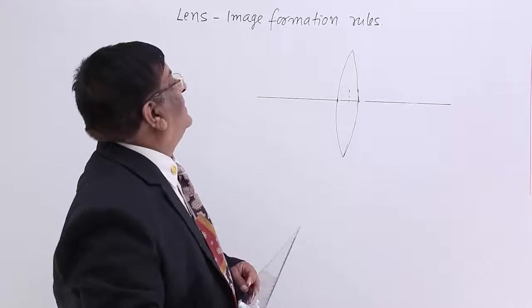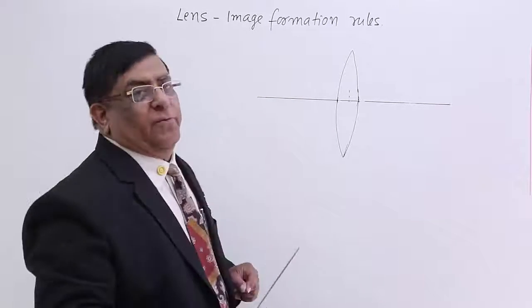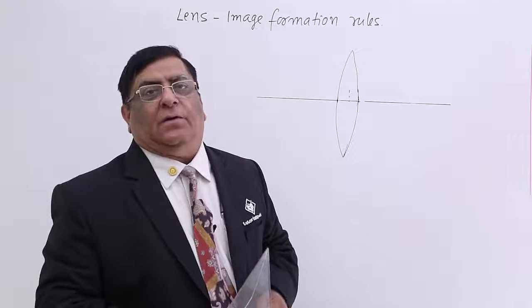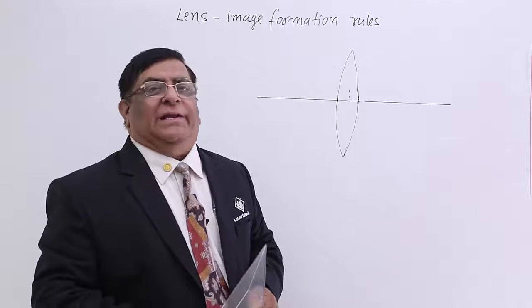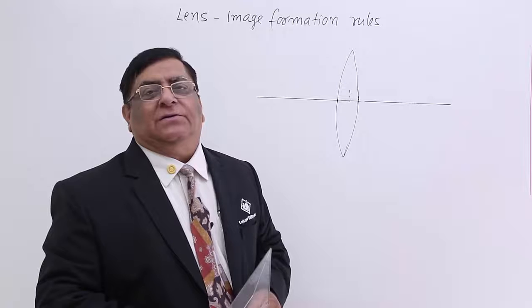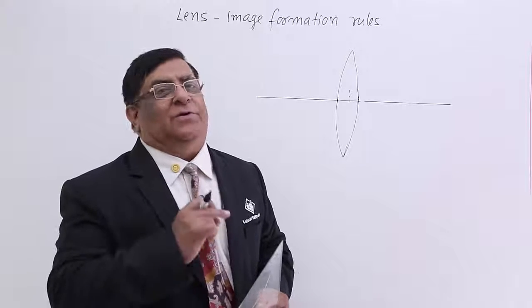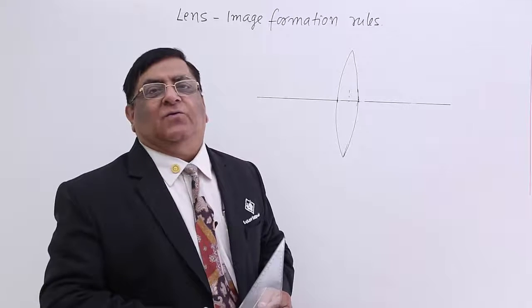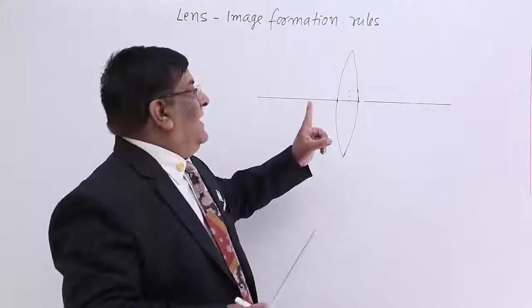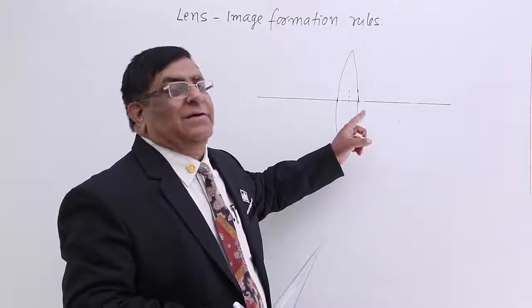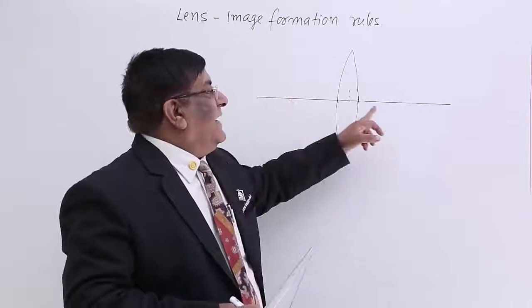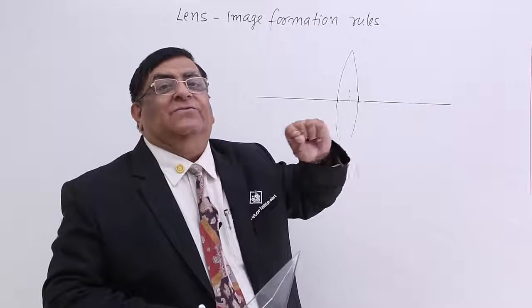In the lens we will see what are the rules for image formation. The first rule: any ray which is incident and has a direction parallel to the principal axis will pass through the lens and intersect the principal axis at focus.